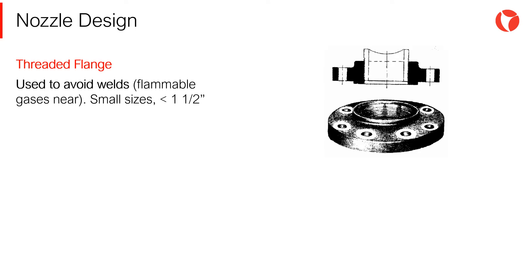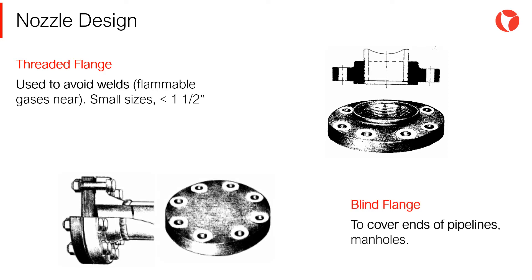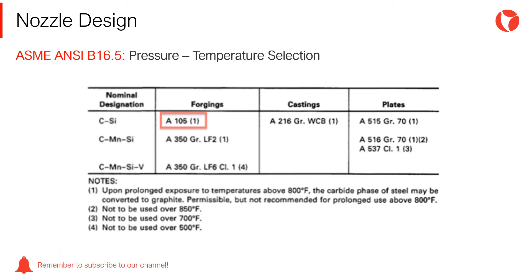Threaded flanges are useful when welding is to be avoided, for example in processes where flammable gases may exist. Finally, we have the blind flange, which is used to cover ends of pipelines, manholes of pressure vessels, and hand holes. These flanges have standardized dimensions and have been designed to withstand specific design conditions — pressure and temperature range. That is why they are not calculated, but selected.